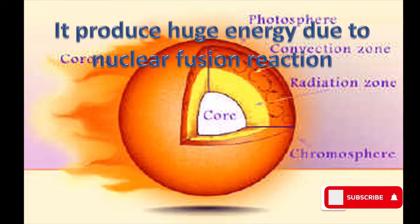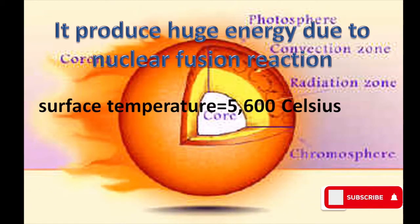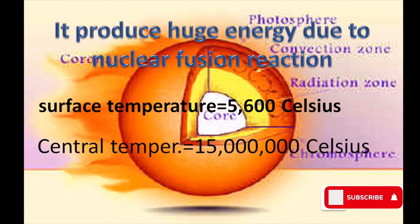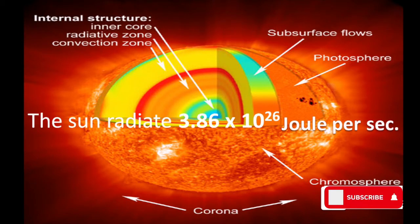The core produces huge energy due to nuclear fusion reactions. The surface temperature is about 5,600 degrees Celsius. The central temperature is about 1.50 lakh degrees Celsius. Its internal structure shows that heat is radiated from the core to the corona. The Sun radiates about 3.86 × 10^26 joules of energy per second.